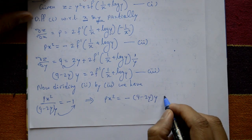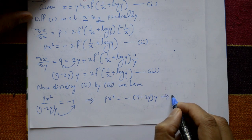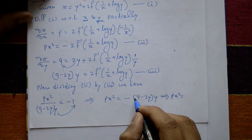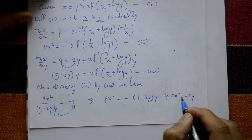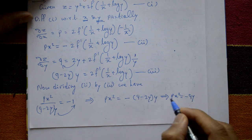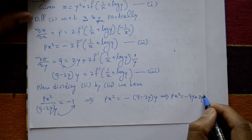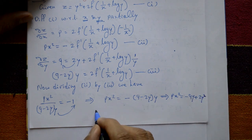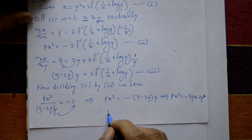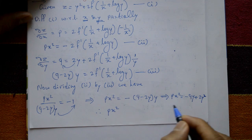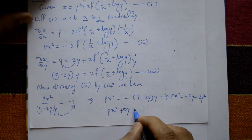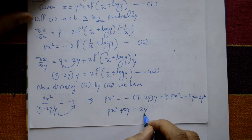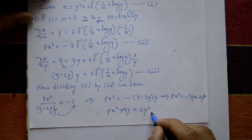Opening the bracket: px² equals minus qy minus minus, which is plus 2y². Shifting the qy term to the left-hand side: px² plus qy equals 2y². This is the required PDE.